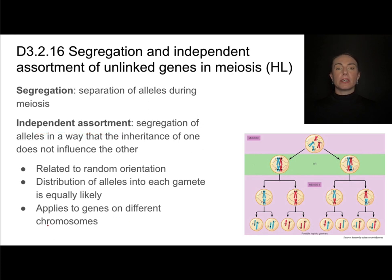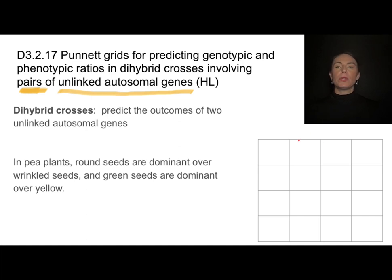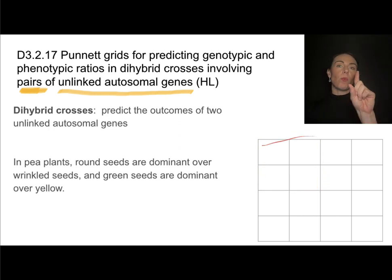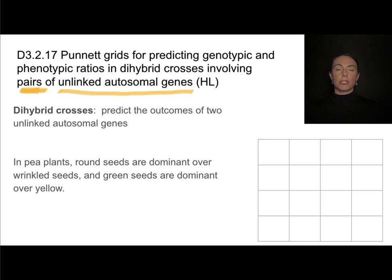Independent assortment applies to unlinked genes — genes on different chromosomes. If I want to track the inheritance of two unlinked autosomal genes, I can use what's called a dihybrid cross. We've been using Punnett grids with four squares on the inside to track the inheritance of one gene. We're not going to be tracking sex-linked genes using dihybrid crosses.